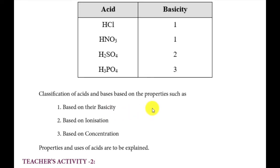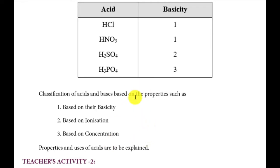HCl ionizes to give one H+ ion. Then, dibasic acid — there are two replaceable hydrogen atoms. Example: sulfuric acid, H2SO4. This is tribasic acid — there are three replaceable hydrogen atoms. Example: phosphoric acid, H3PO4.